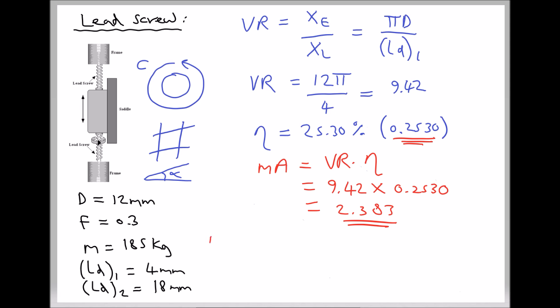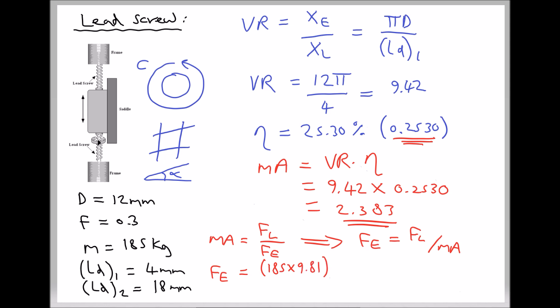Mechanical advantage equals the force of the load divided by the force of the effort. Therefore, the force of the effort equals the force of the load divided by the mechanical advantage. We need to take care here because we have the mass of the load, and the equivalent force is the weight — weight is mass times gravity. The weight of the load is 185 kg times 9.81, divided by the mechanical advantage of 2.383, giving us an effort force of 761.59 N.